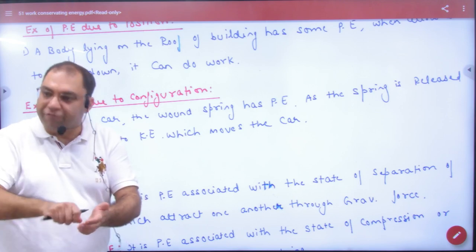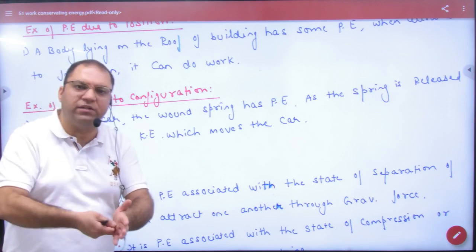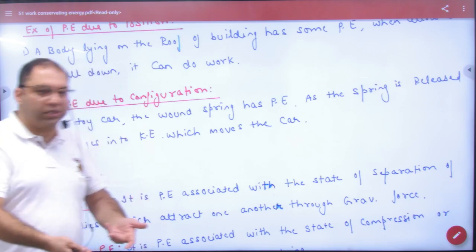So we supply energy. We do work. The work we do gets stored in the spring as energy. This is the form of potential energy.